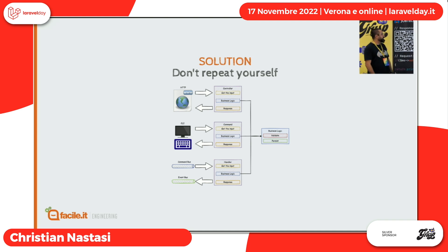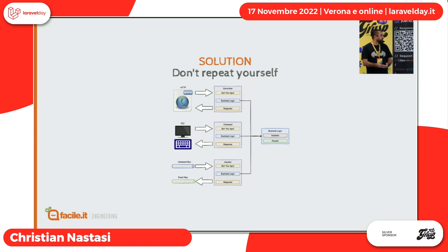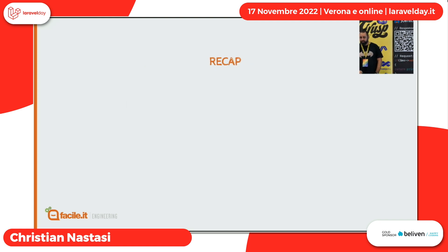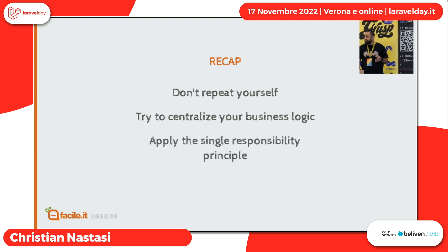Prima soluzione: Don't Repeat Yourself. Isoliamo la nostra logica e la mettiamo in un servizio, in una componente che si occupa solo di fare quel tipo di lavoro, e poi ovviamente la richiamiamo. In questo modo, se dovessimo evolvere — aggiungere, che so, un messaggio da Rabbit, da Kafka, da qualsiasi altro broker — non ci cambia praticamente niente, dobbiamo soltanto aggiungere il pezzettino che riceve l'input e tutta la logica rimane invariata. Recap: centralizzate la vostra logica di business e cercate di applicare la SRP, Single Responsibility Principle.